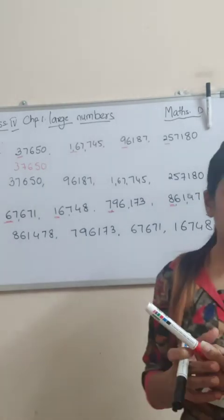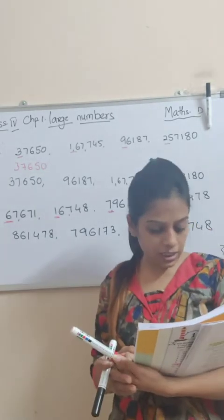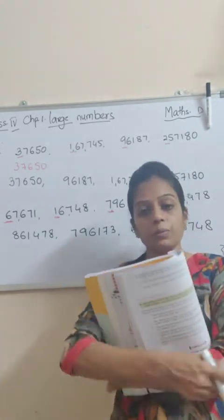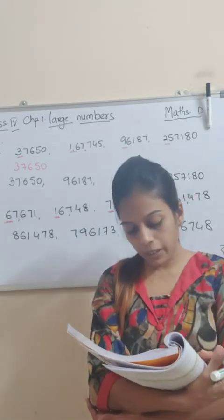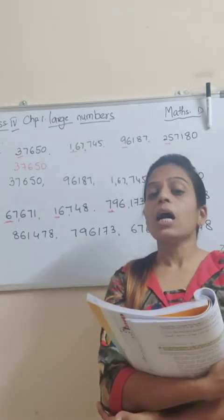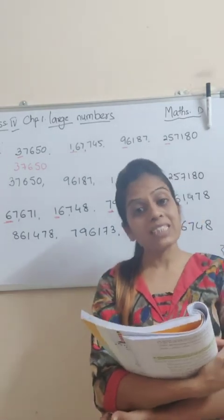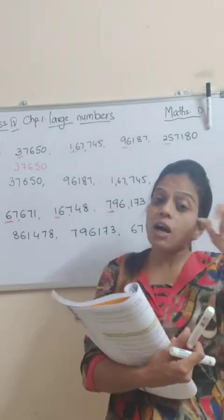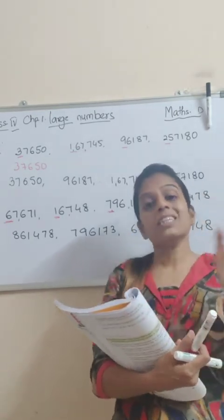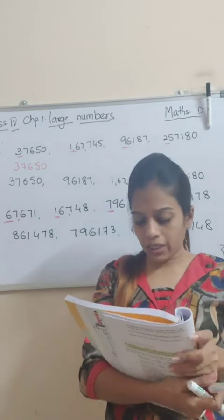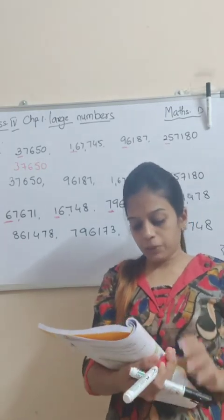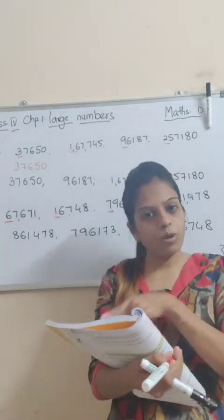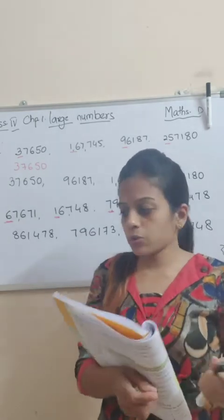Bit number D — students, circle the greatest number and cross out the smallest number. Isme bhi aapko compare karna hai. Pehle number of digits kaunt karo. Agar sab mein same hain, toh see the first number. Agar first number bhi same hain, see the second number. That way, sab se bade wale number ko circle karo aur chhote wale ko cross out karo.